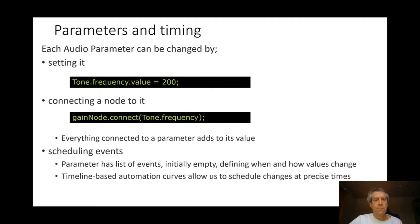So how do we do this with the Web Audio API? Even without thinking of automation, you have the ability to change any of the audio parameters. They can be changed by just directly setting the level. So if you have an oscillator called tone and you want to change its frequency, then simply setting tone.frequency.value sets the frequency parameter of that tone to whatever you want — in this case, 200 hertz.